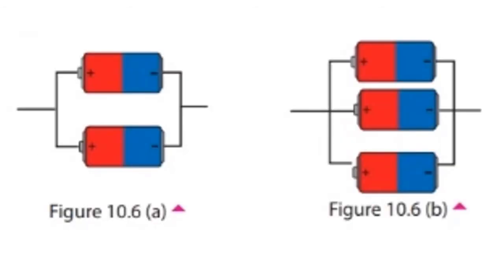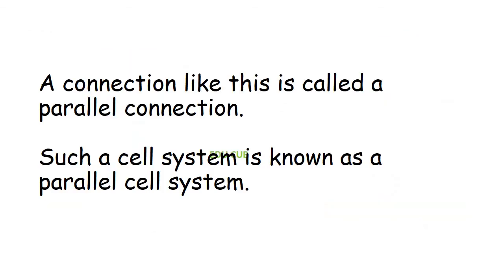The next cell system is the parallel cell system. In this connection, positive terminals of all the cells are connected to one point and the negative terminals of them are connected to another point. A connection like this is called a parallel connection. Such a cell system is known as a parallel cell system.